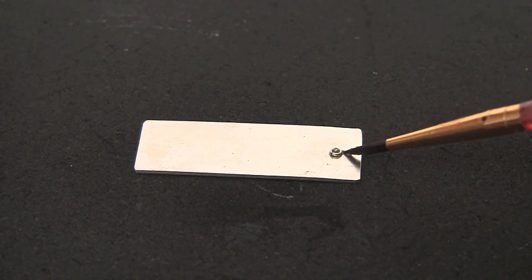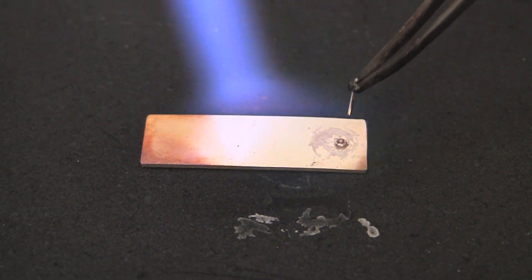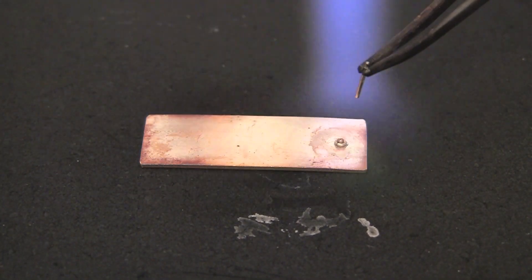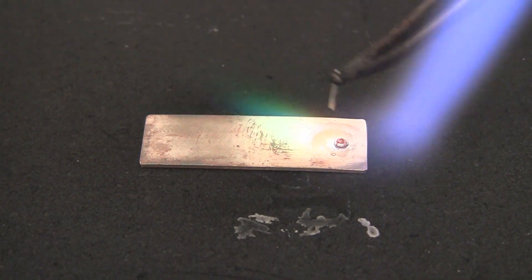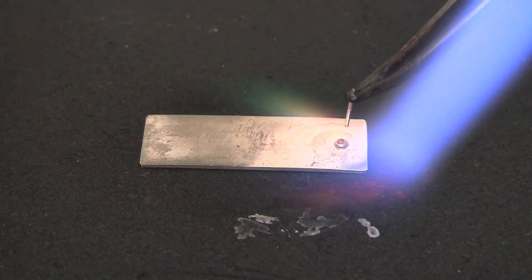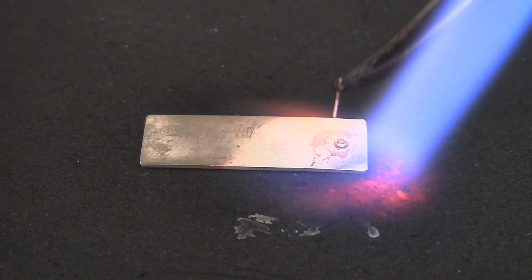Hold the earring post off to the side until the solder flows. As the post passes through the flame, it gets hot enough to solder without overheating.